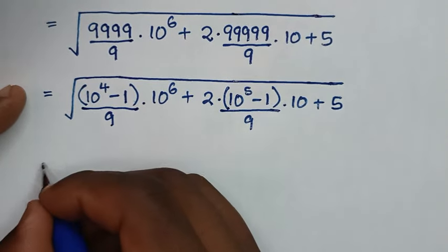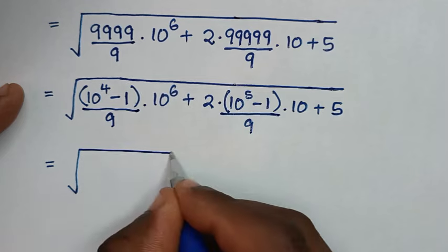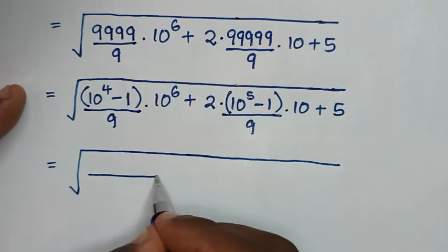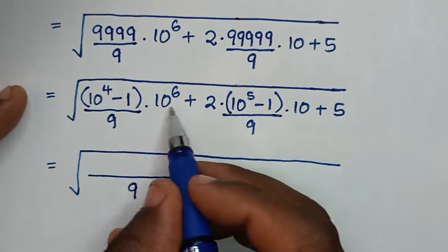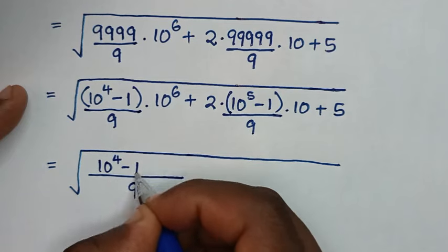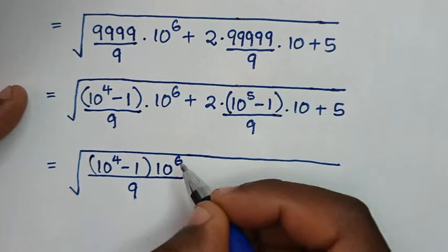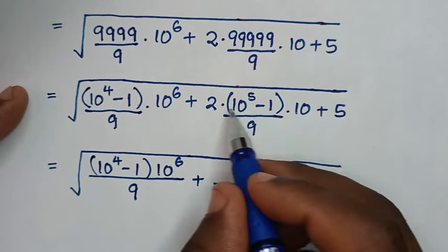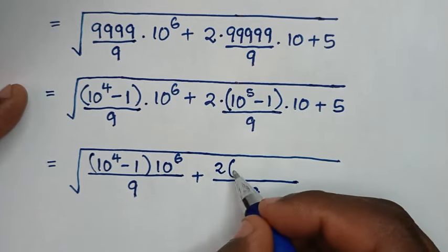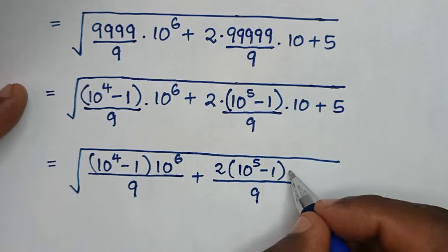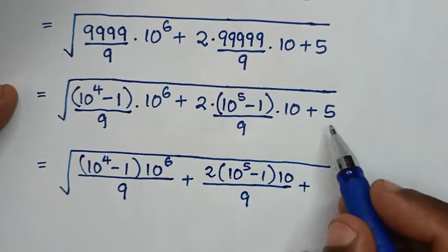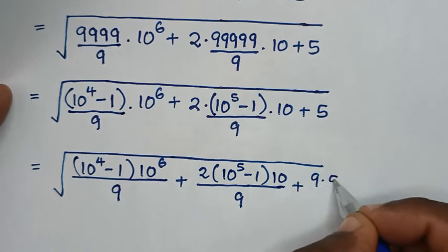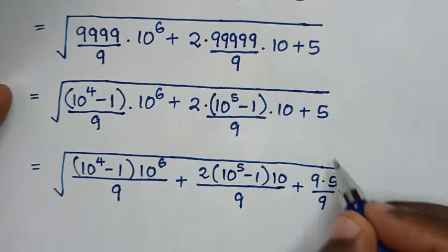Then in the next step, it will be equal to square root of — here we make 1 and 2 have the same denominator of 9. So it will be over 9, this times this. So: 10 power of 4 minus 1, bracket, times 10 power of 6. Then plus — here denominator of 9 — so it will be this times this times this. So: 2 bracket 10 power of 5 minus 1, bracket, times 10. Then plus — 5 to have denominator of 9 is same as 9 times 5 over 9. So it will be 5.